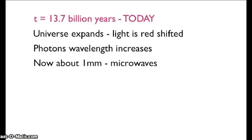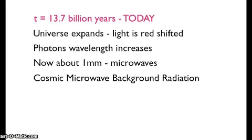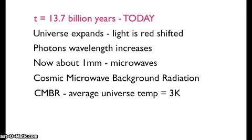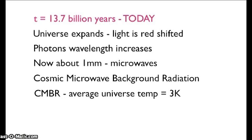They are microwaves. They form what is known as the Cosmic Microwave Background Radiation, CMBR. This radiation can be detected from all directions in space and is an indication of its presence throughout the universe. The average temperature of this radiation is an indicator of the average temperature of the entire universe, which is now 3 Kelvin.